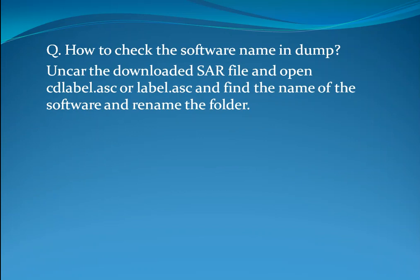How to check the software name in a dump? Whenever we download the software, the name is not contained in the folder. For knowing what software we downloaded, we first have to uncover the downloaded share file and open cdlabel.asc or label.asc. In these files we get the name of the software. Then we have to rename the folder.